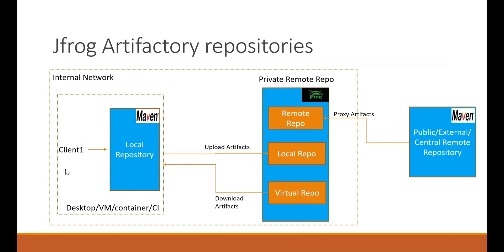Our Maven builds are running in the client machines. If we don't have Artifactory, Maven will download the required dependencies from the remote repository. Once Artifactory is configured in our internal network, we can configure Maven to download the required artifacts directly from the Artifactory virtual repositories instead of from external repositories. Let us see how to configure Maven in client machines or CI servers to do this.